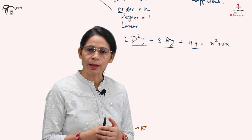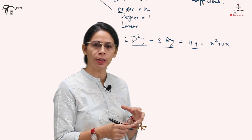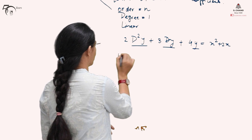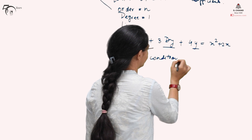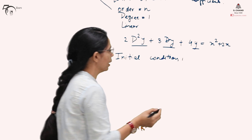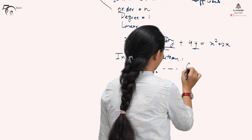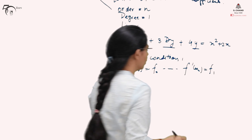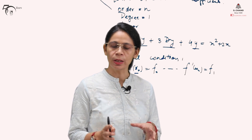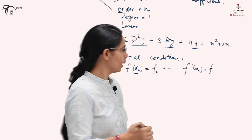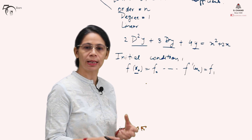Next, we will see what is meant by an initial value problem. Before that, we must understand what initial conditions are. Initial conditions are given for a differential equation in the form: y(x₀) = f₀ or y′(x₀) = f₁. If such conditions are given, they are called initial conditions, where x₀ is the initial point of the range on which the independent variable is defined. A differential equation along with initial conditions is called an initial value problem.